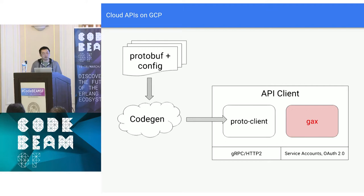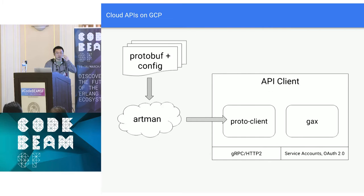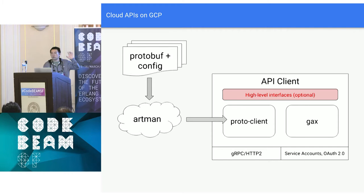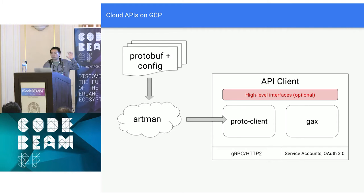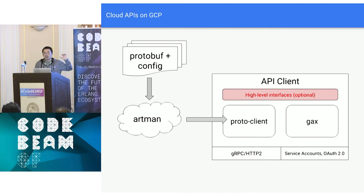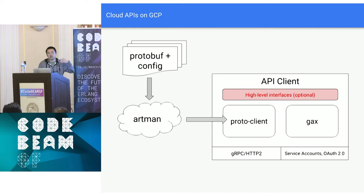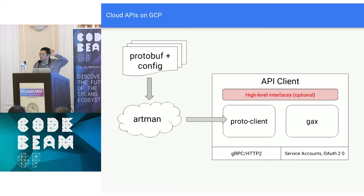We have an additional small handwritten layer for higher-level interfaces, meant to be idiomatic for each language. An example: in Elixir/Erlang, we have a logging service where you'd probably implement a logger behavior. For PubSub, you'd want a process that loops over messages from a topic without caring about the API calls — just a higher-level abstraction. These are one-offs for each individual API and don't belong in the shared library, so they live with each individual handwritten layer.